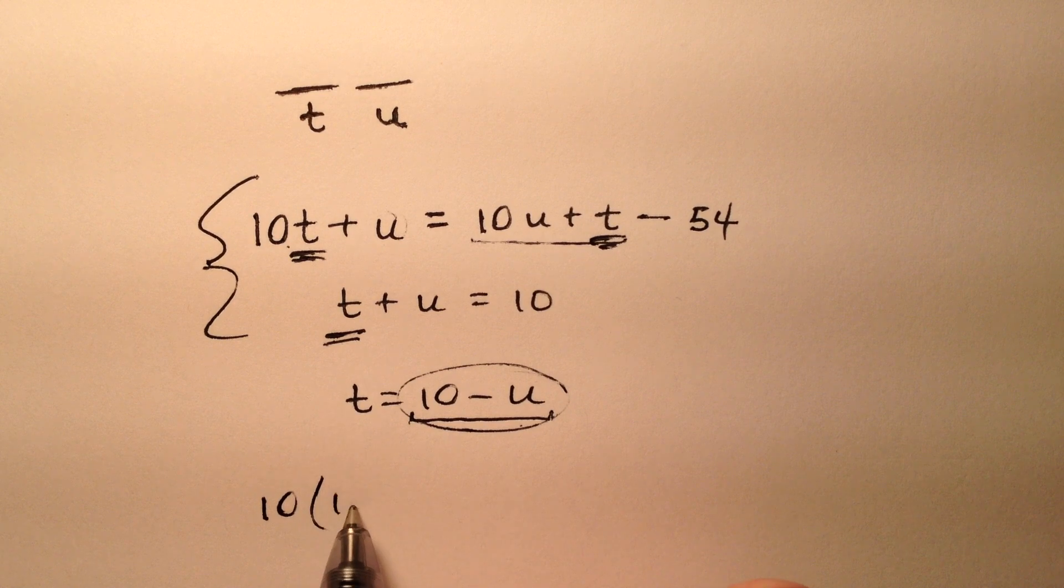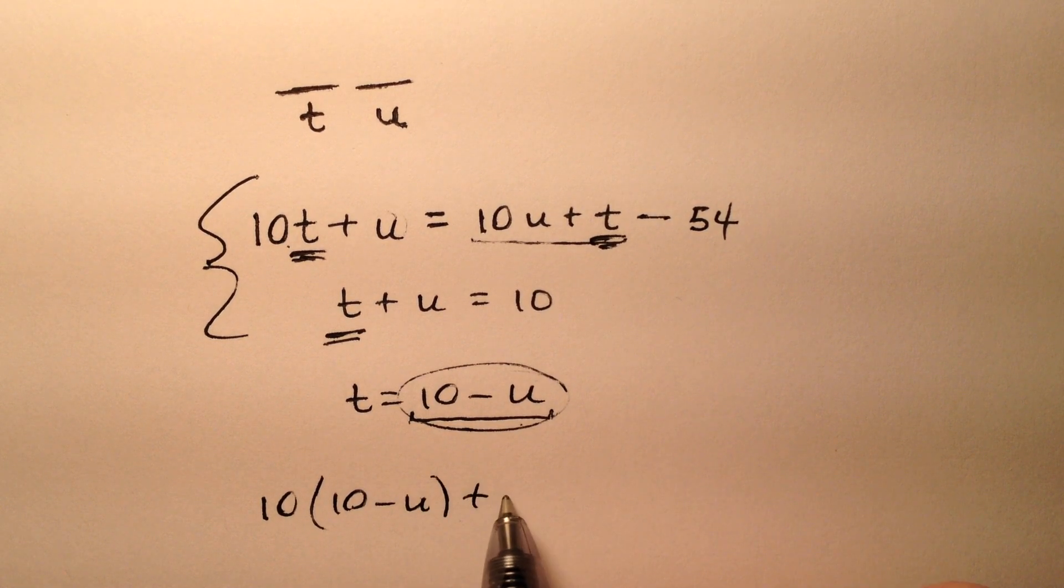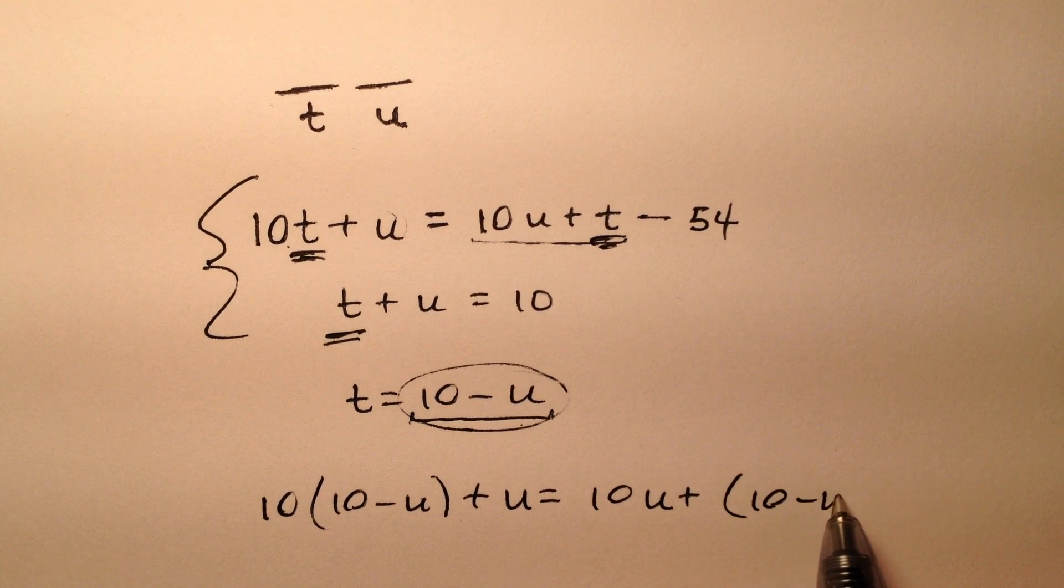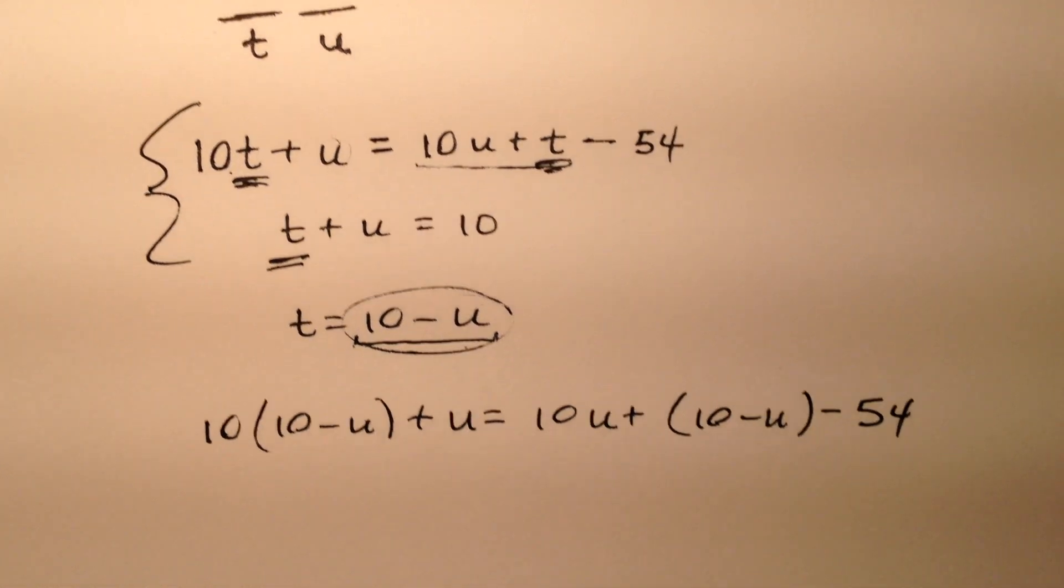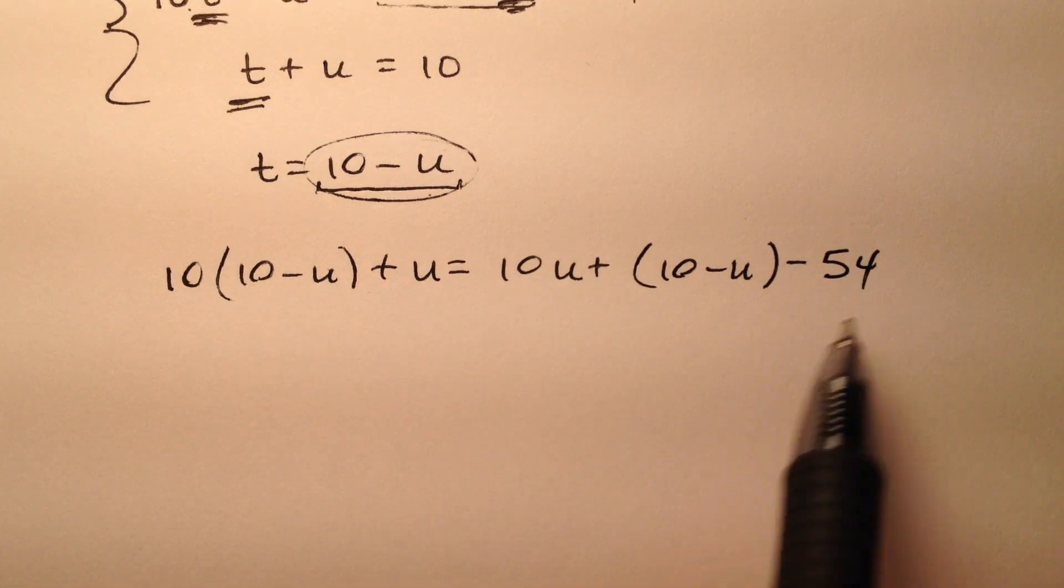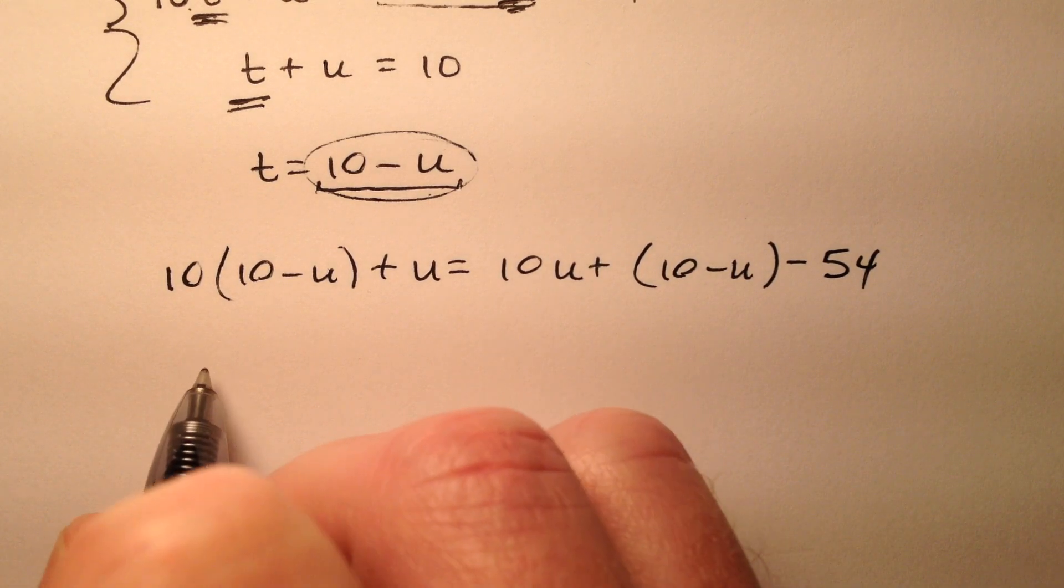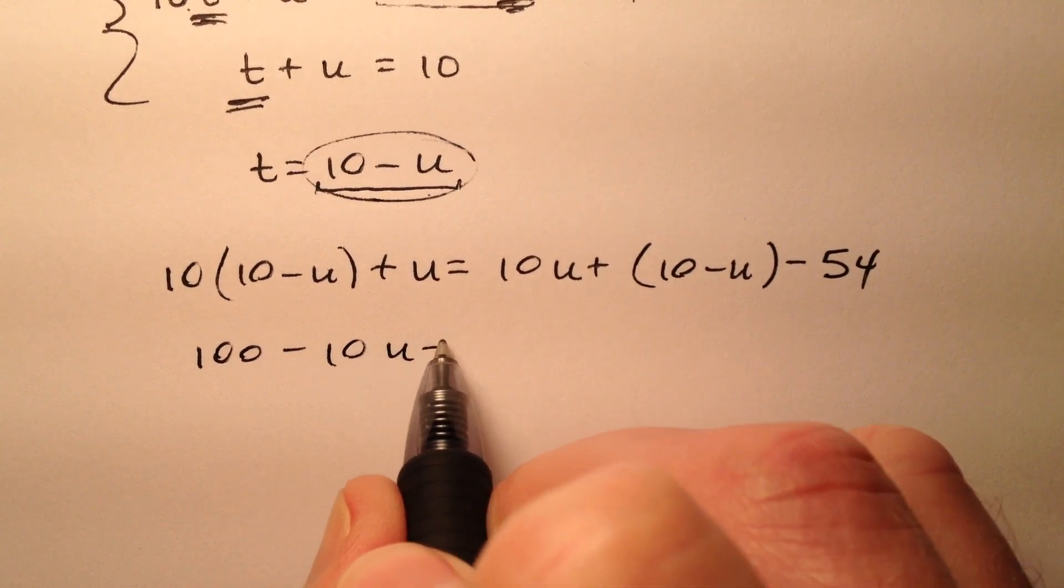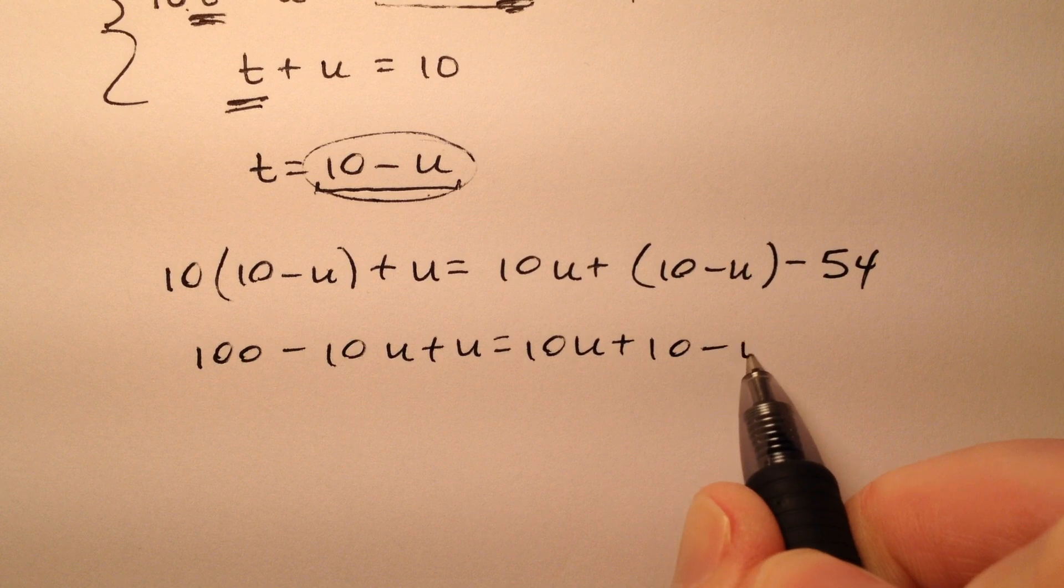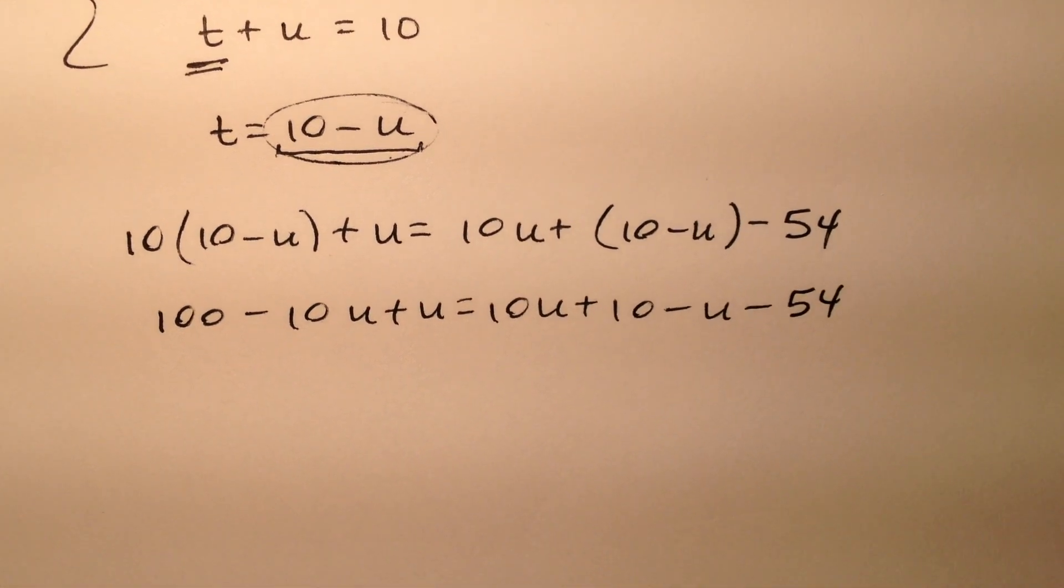So 10 times (10 minus U) plus U equals 10U plus 10 minus U minus 54. Now I have a single equation with just one variable, U. So 100 minus 10U plus U equals 10U plus 10 minus U minus 54.